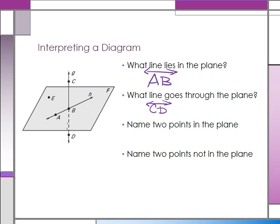Two points in the plane would be points actually lying on the plane — in that shaded parallelogram area. So E, A, and B all lie on the plane. Notice that F is just another name label for the plane; it's not a point because it doesn't have a point symbol next to it. Two points not on the plane would be points C and D.